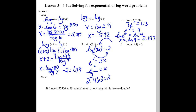Try number six. First step: write it in exponential form using the circle method. We would say 4 to the third equals x plus 5. What's 4 to the third? That's 64. So we have 64 equaling x plus 5. Subtract the 5 over and we get x = 59.